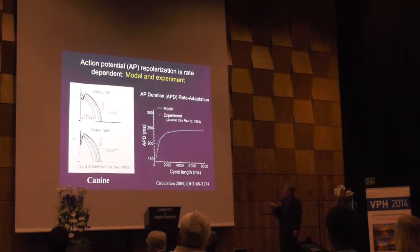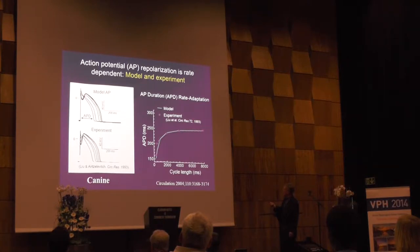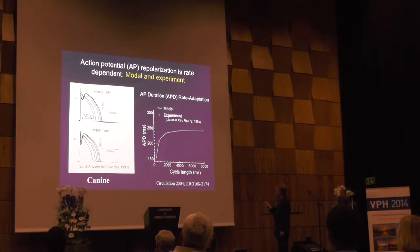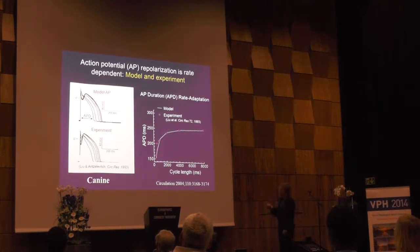This is a model-simulated rate dependence of the action potential. You can see how the action potential shortens as the rate is increased, long to short. There are also changes in morphology — this is the model of the epicardial myocyte in the dog, and these are experiments from the epicardial area in the dog. The correspondence between model and experiment is quite good. This is a summary of the adaptation curve: as you decrease cycle length and increase rate, you shorten the action potential duration, especially in the physiological range.